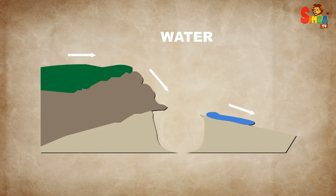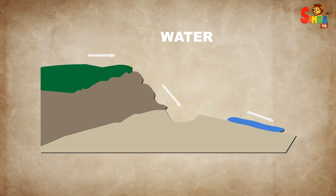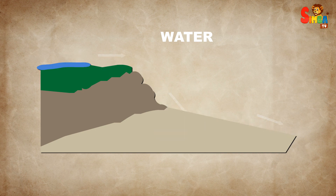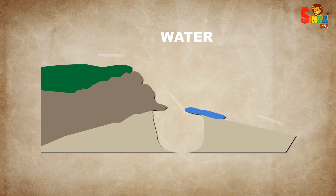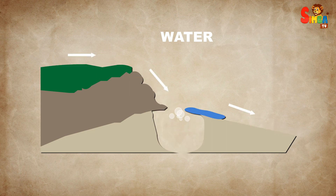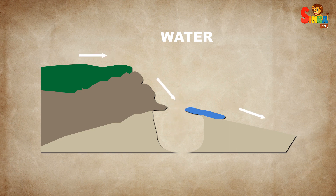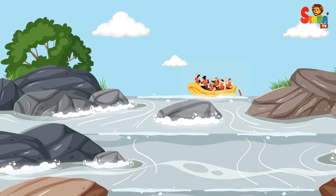Rapids emerge in rivers where the riverbed steepens, leading to turbulent water flow that exposes rocks and creates shallow areas. Rapids typically comprise two sections: a swift run and a cascading section. When water rushes over rocks, it generates air bubbles, resulting in a frothy appearance known as white water.